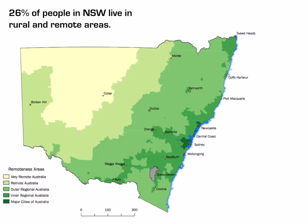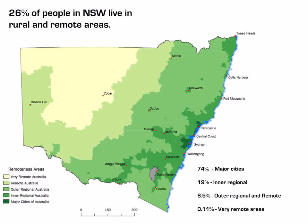26% of people in New South Wales live in rural and remote areas, and the breakdown is quite similar to the national statistics. This particular diagram shows areas considered very remote such as Cobar, remote such as Broken Hill, outer regional places like Dubbo and Moree, inner regional including Wagga Wagga, Orange, Bathurst and Goulburn, and major cities including Sydney, Newcastle and Wollongong.